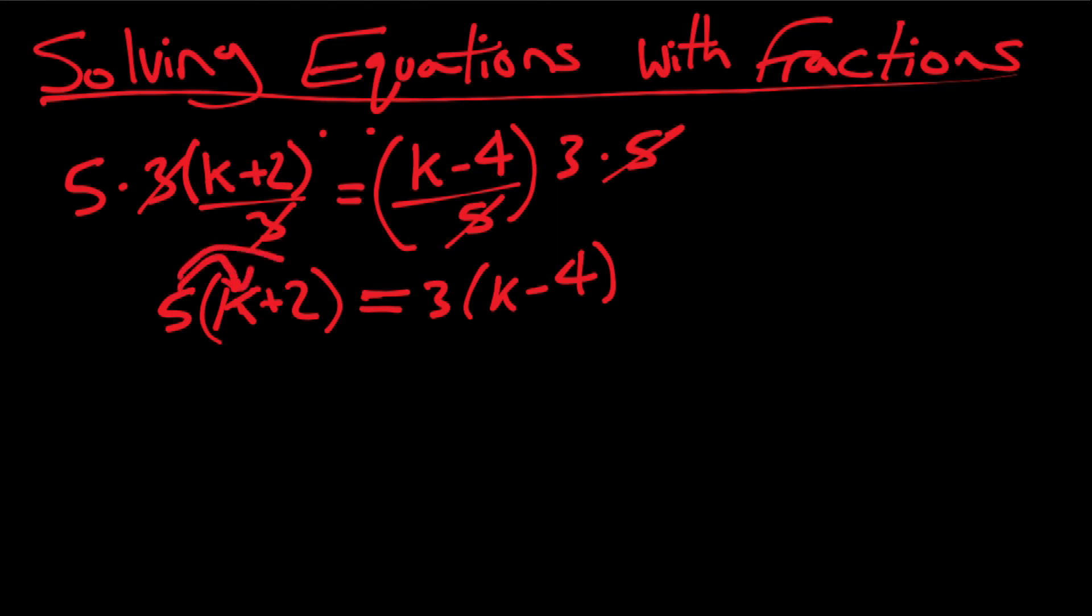Five into k, five into two, five k plus 10. And then the other side, we got a three k and then we got a negative four. So that's three k minus 12.